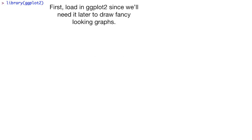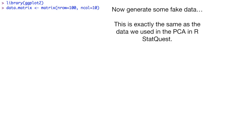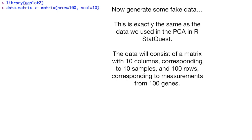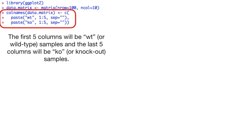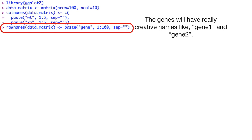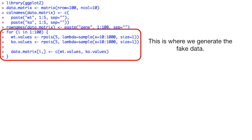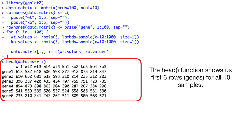First, we load in ggplot2 since we'll need it later to draw fancy looking graphs. Now we generate some fake data — this is exactly the same as the data we used in the PCA and R StatQuest. The data will consist of a matrix with 10 columns corresponding to 10 samples and 100 rows corresponding to measurements from 100 genes. The first five columns will be WT, or wild type samples, and the last five columns will be KO, or knockout samples. The genes will have really creative names like Gene1 and Gene2. The head function shows us the first six rows, or genes, for all 10 samples.